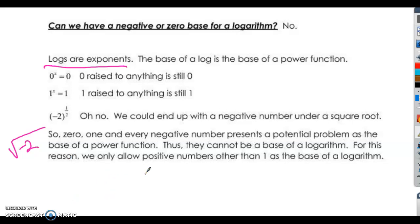So 0, 1, and every negative number presents a potential problem as the base of a power function. So they can't be used as bases of logarithms. So for that reason, we just allow positive numbers other than 1 as the base of a logarithm. I found that to be the best explanation that I can find. So peace out.